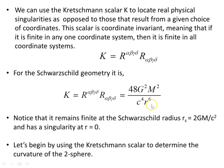When you substitute the Schwarzschild radius into the Kretschmann Scalar, you find it is a finite value and doesn't become infinite as the metric blows up at that point — suggesting a singularity which isn't real; it's simply the choice of coordinates. See the other videos on the Schwarzschild geometry for more detail.